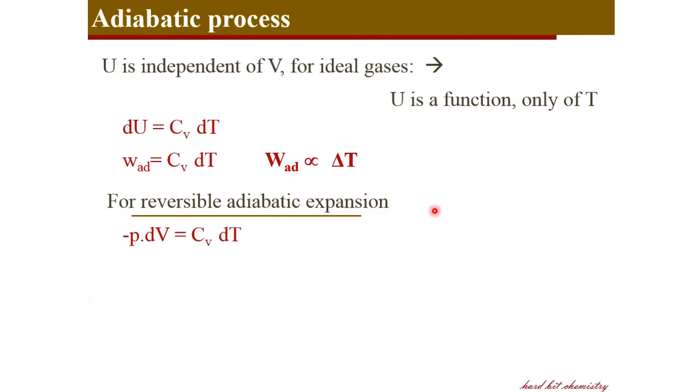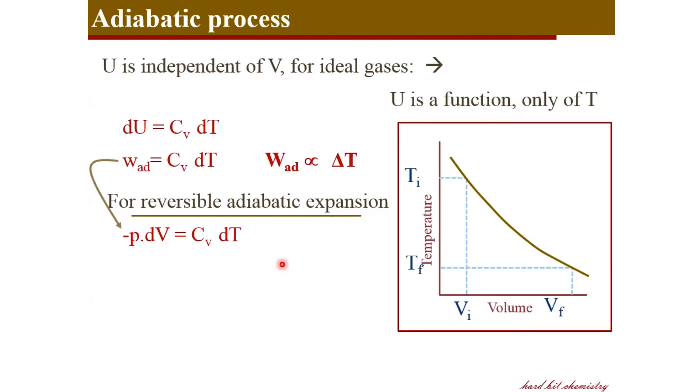For a reversible adiabatic expansion, we know the reversible work is negative of PdV, where the small p is the system pressure, pressure of the gas inside the system. And therefore we reach at this conclusion: the adiabatic work, which is given by negative of PdV, equals CvdT, where Cv is the heat capacity and dT is the change in temperature as a consequence of the adiabatic work. And our temperature-volume graph will look like this.